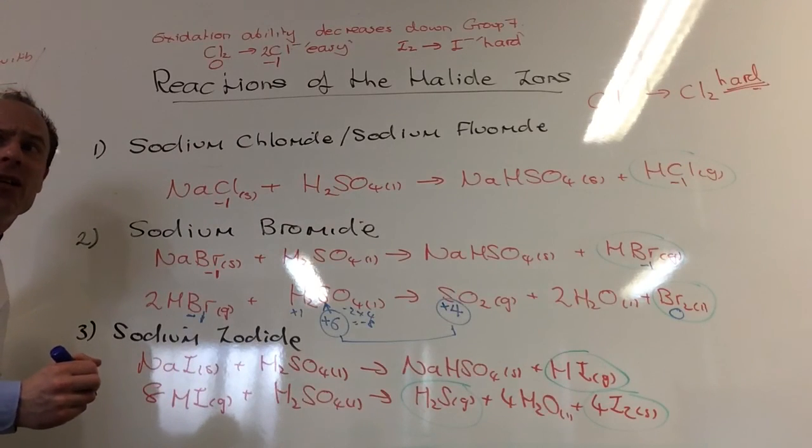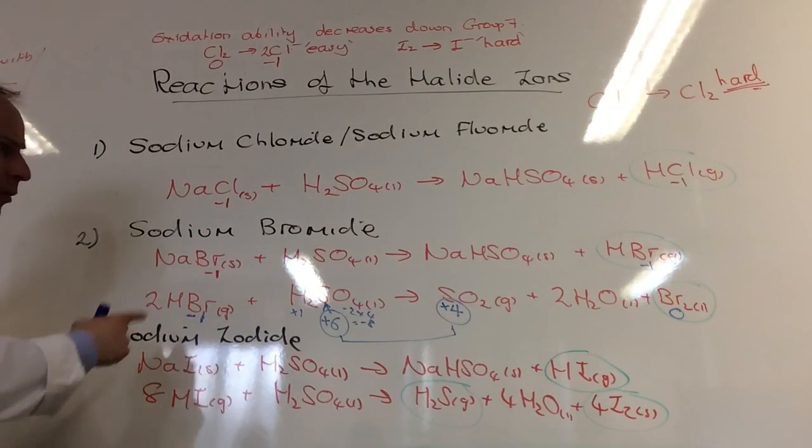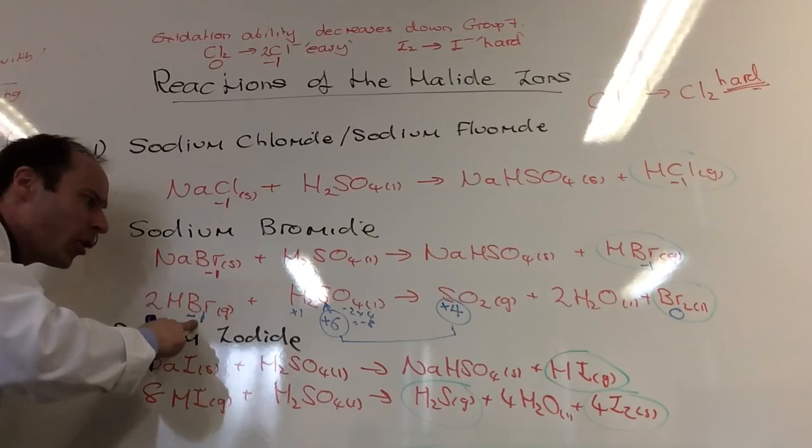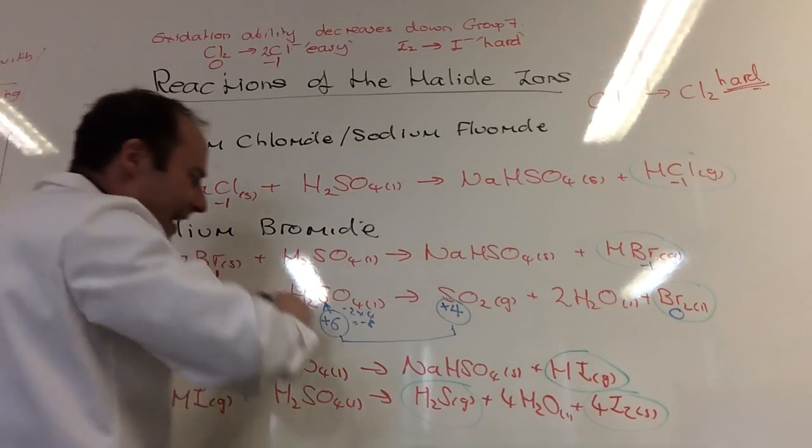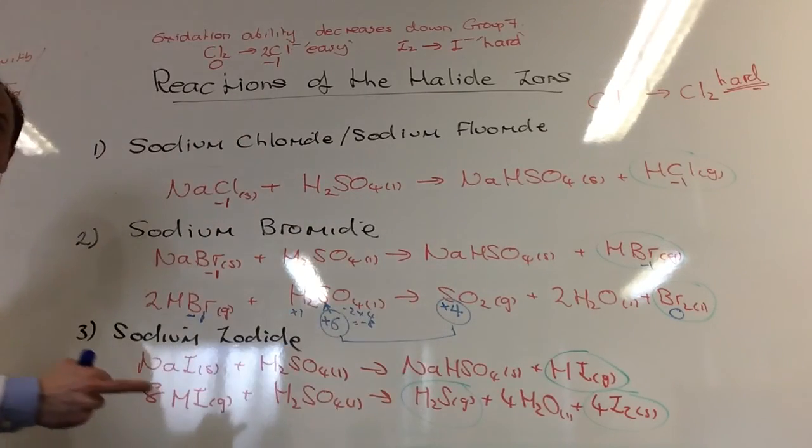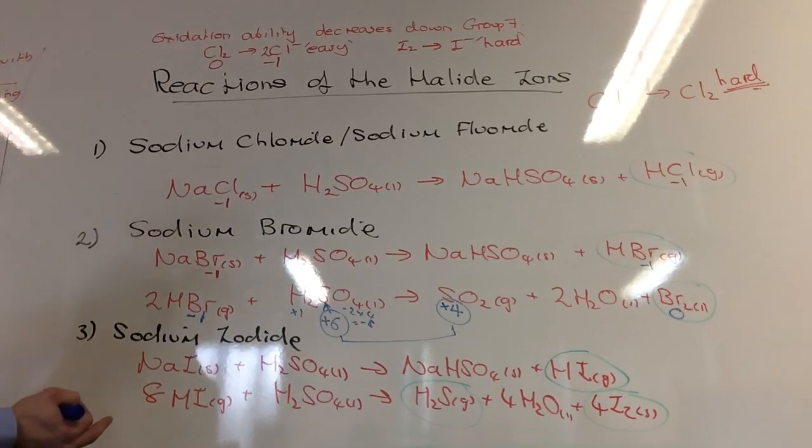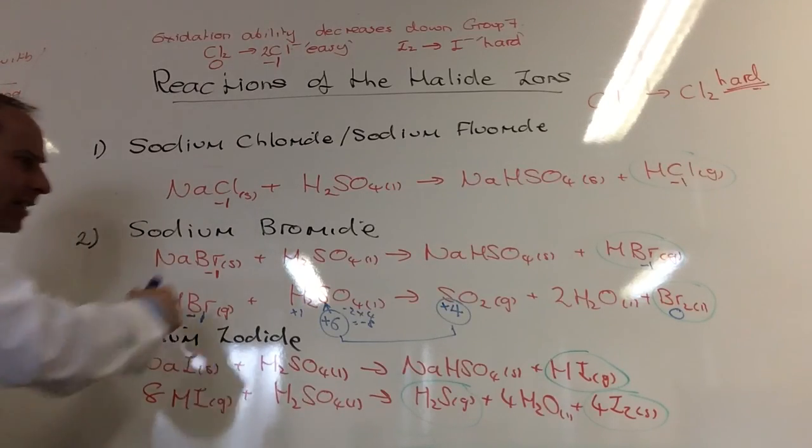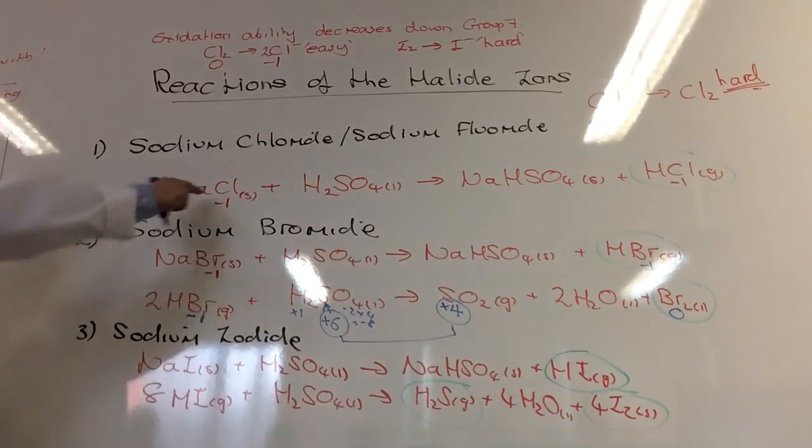So sulfur has been reduced and bromine has been oxidized. So bromide is able to reduce sulfur. So it's a better reducing agent, which means it's more easily oxidized than chlorine.